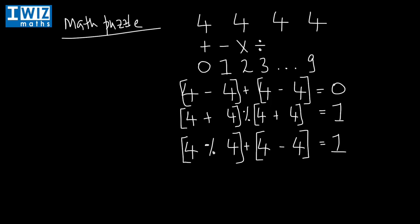So what you're meant to do now is try and get to two, try and get to three, all the way up to nine. That's what you're meant to do now.